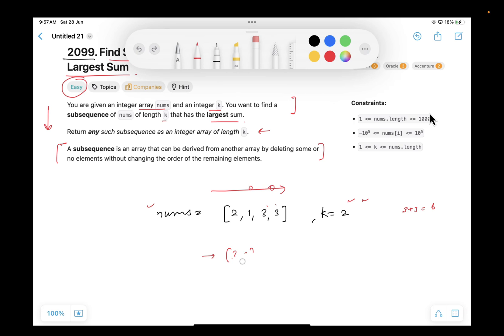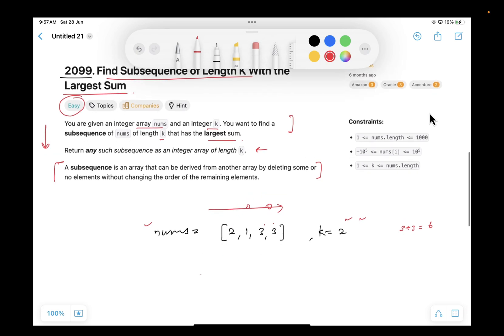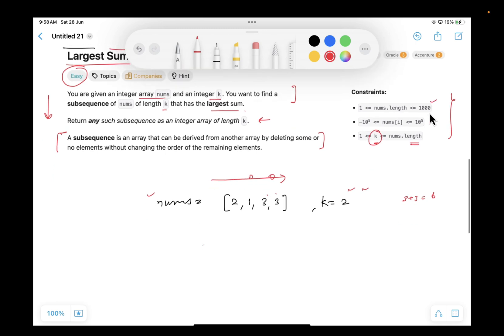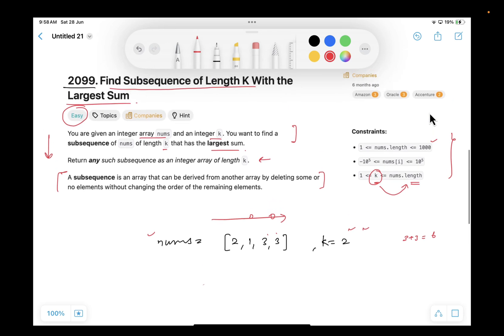Let's have a look at the constraints as well. nums.length will go till 1000, and the value of k will go till nums.length. So they can also say that we might have to pick all the items. So here, see this k is going till nums.length. This is very special constraint. You will see, you will analyze it later.